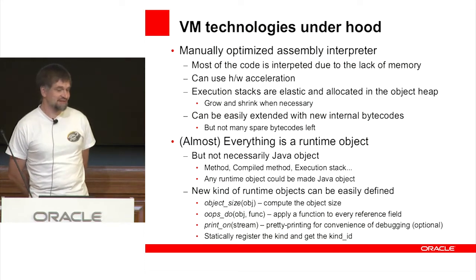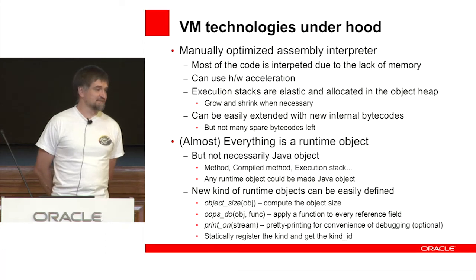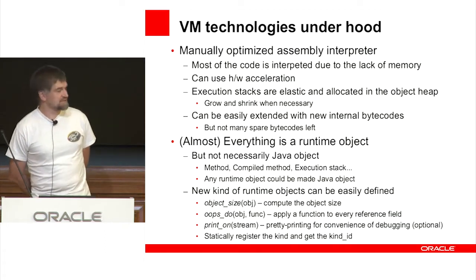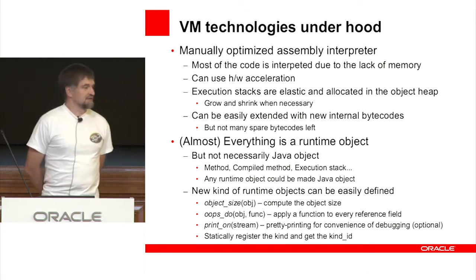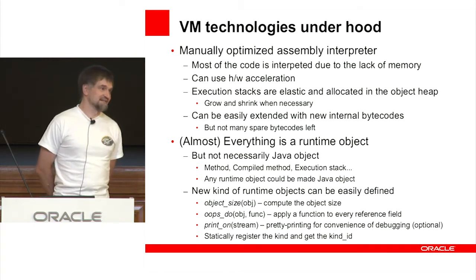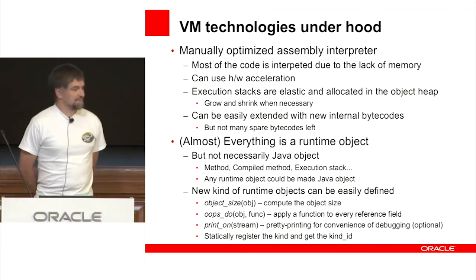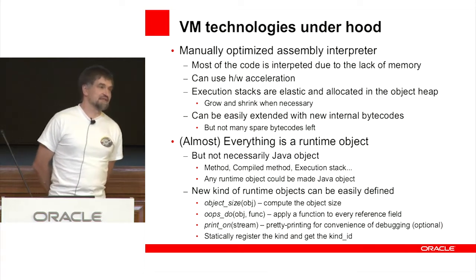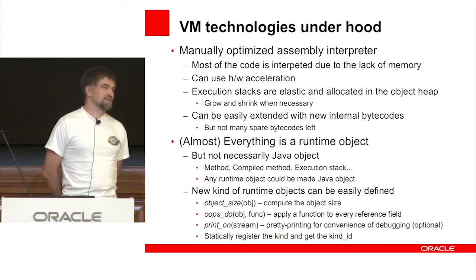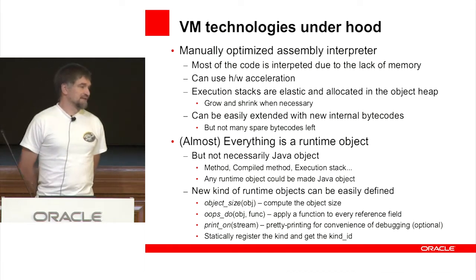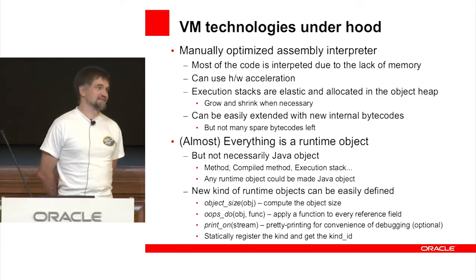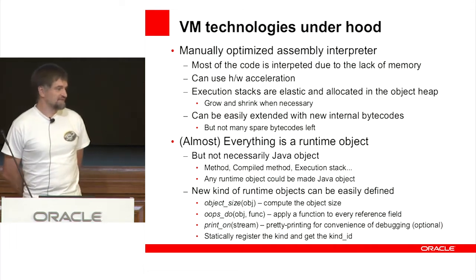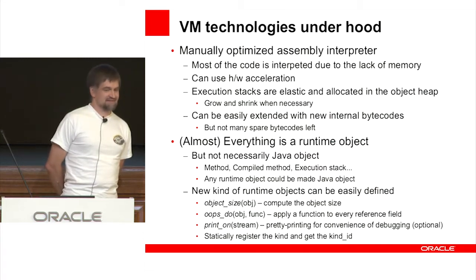This is a pretty advanced virtual machine. It has a manually optimized assembly interpreter, which is necessary because most code is interpreted due to the lack of memory — we don't really have memory for a compiled code cache. Execution stacks are elastic and allocated in the object heap, so they can consume the entire heap if needed, and they shrink and grow as necessary. The set of bytecodes can be easily extended with new internal bytecodes.